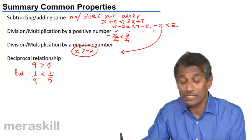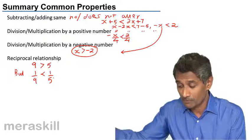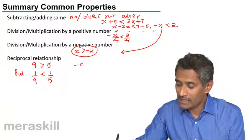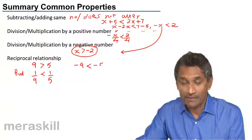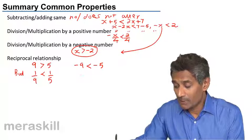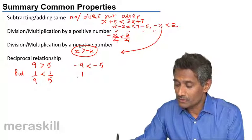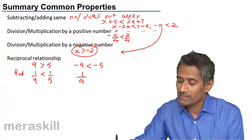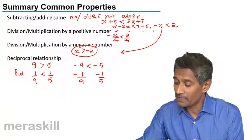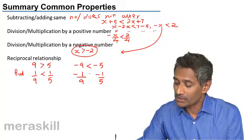I remember the example of the apples I told - 1 ninth of 1 apple is definitely less than 1 fifth of an apple. But similarly, you have minus 9 less than minus 5, we know that. But when it comes to the reciprocal, you have 1 upon minus 9, which is same as minus 1 by 9, and minus 1 by 5, and the inequality changes.